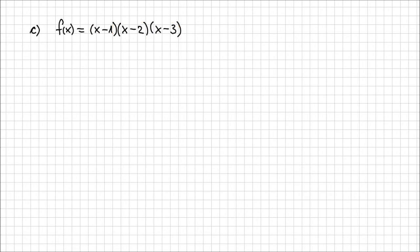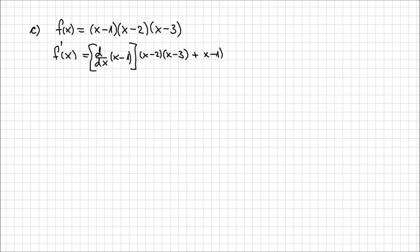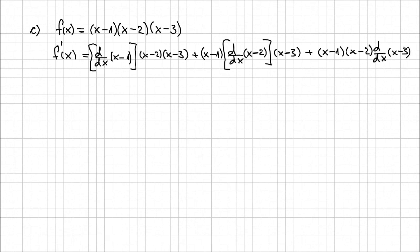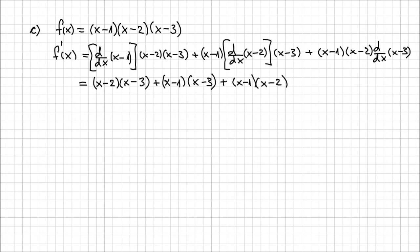Applying this formula: f prime of x = d/dx(x-1)·(x-2)·(x-3) + (x-1)·d/dx(x-2)·(x-3) + (x-1)·(x-2)·d/dx(x-3). Each derivative equals 1, so this becomes (x-2)(x-3) + (x-1)(x-3) + (x-1)(x-2).